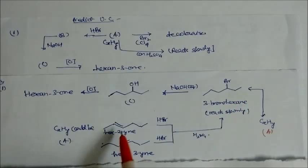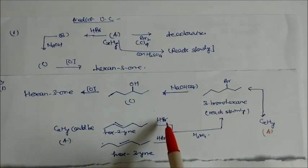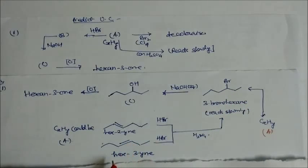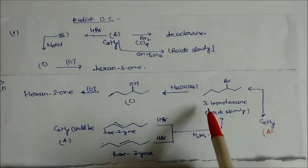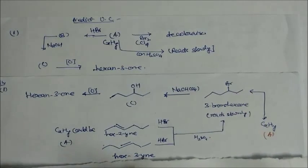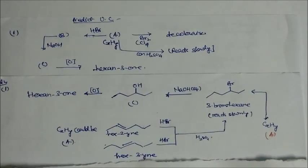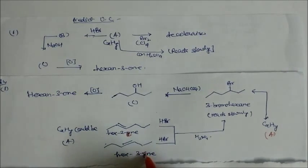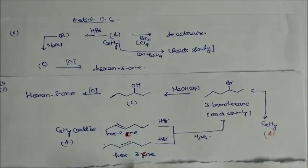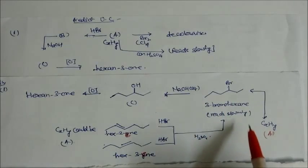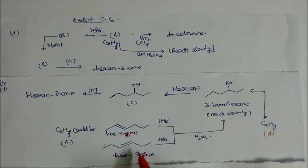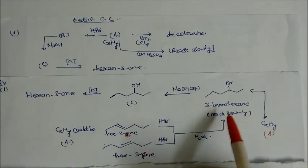So this secondary carbon has a Br group — this is 3-bromohexane. This 3-bromohexane can be obtained from the alkene by using HBr. So the compound is hex-3-ene, and this is an alkene. In this case, the hydrocarbon could be hex-3-ene — there are two possibilities, but in both cases, in presence of acid we will get 3-bromohexane.